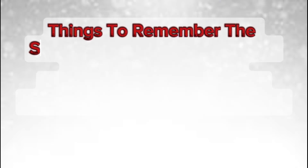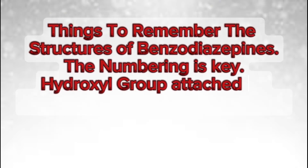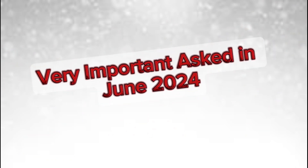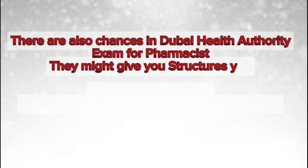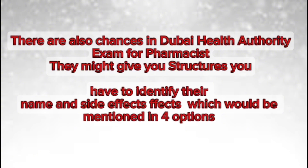Things to remember about benzodiazepine structures: the numbering is key, and the hydroxyl group attached to the third position is used to identify the structure. This was very important and was asked in June 2024. There are also chances in the Dubai Health Authority exam for pharmacists — they might give you structures and you have to identify their name and side effects from four options. Barbiturate structures are also covered.